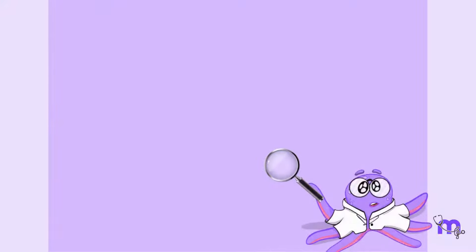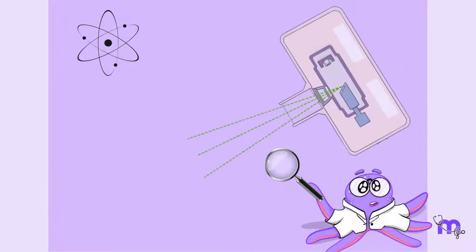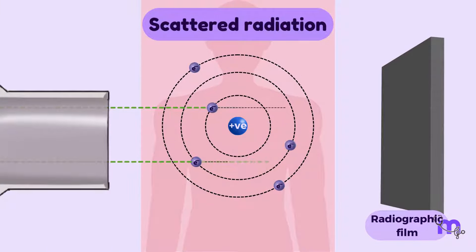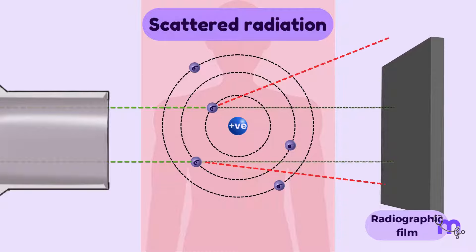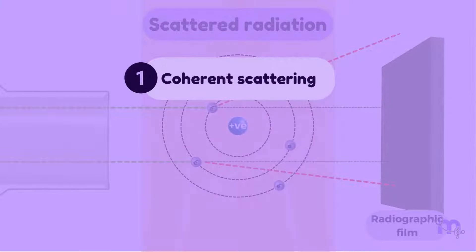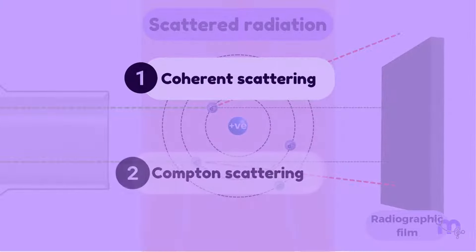Next, let us understand what happens at the atomic level when X-ray photons interact with patient tissue and produce scattered radiation. Scattered radiation is a type of secondary radiation emitted when there is a change in the direction of an X-ray photon with or without loss of energy. This can be of two types: Coherent scattering and Compton scattering.